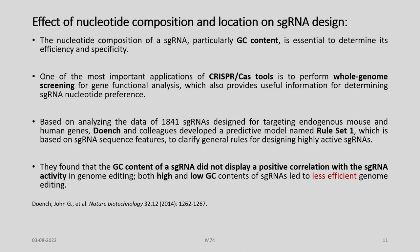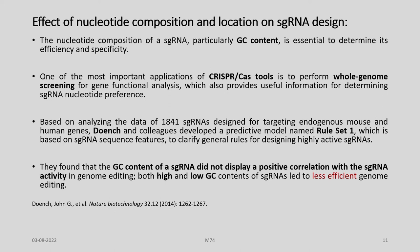Doench and colleagues found that the GC content of sgRNA did not display a positive correlation with sgRNA activity in genome editing, but high and low GC contents led to less efficient genome editing. A similar rule was also identified in genome-scale functional screens using human cells. Additionally, several large-scale datasets suggest that the type of nucleobase is important for sgRNA activity. The nucleobase at position 20, located immediately upstream of PAM, is a key determinant — guanine was highly favorable whereas cytosine was strongly unfavorable.